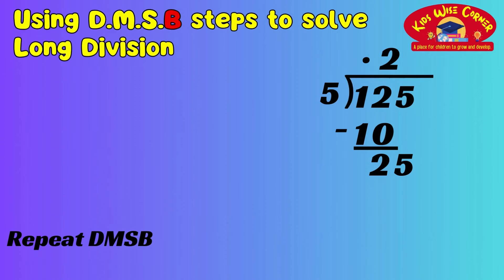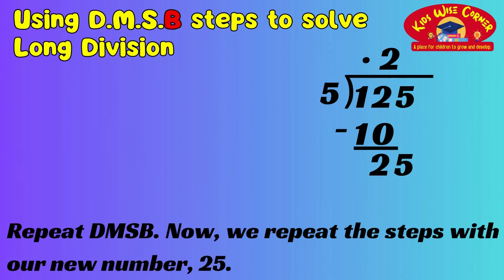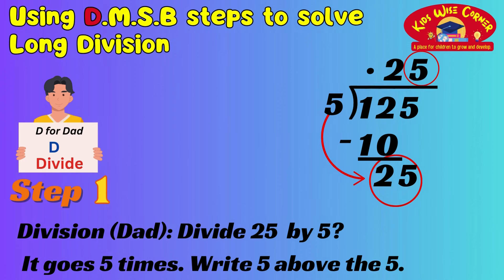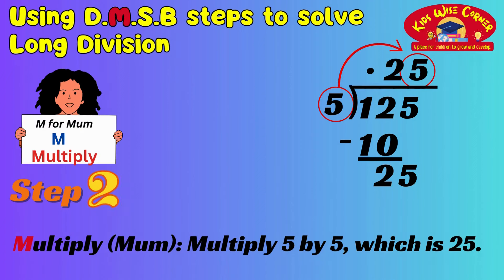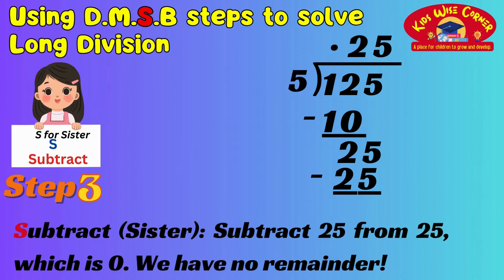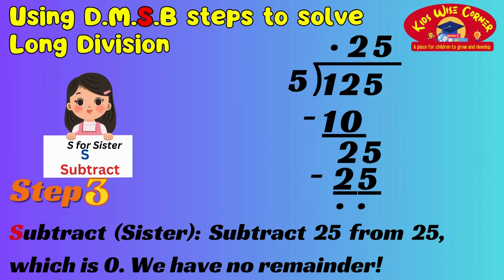Repeat steps D, M, S, and B — which is divide, multiply, subtract, and bring down. Ask yourself, how many times does 5 go into 25? It goes 5 times. Write 5 above the 5. Multiply 5 by 5, which is 25. Write 25 under the 25. Subtract 25 from 25, which is 0. We have no remainder. So 125 divided by 5 equals 25.